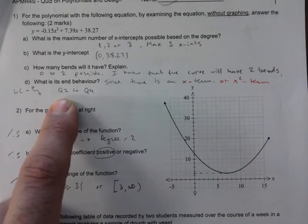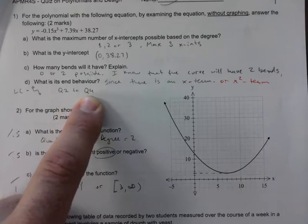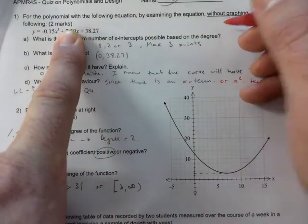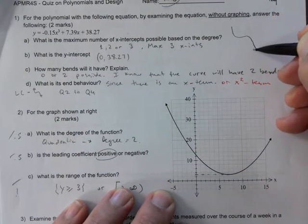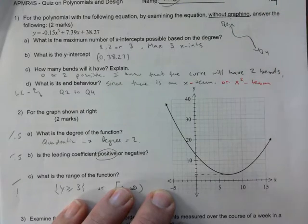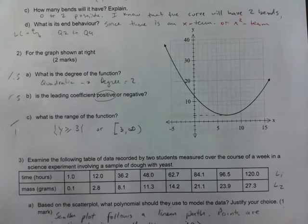And I don't blame you if you don't, right? It was a short lesson. But anyways, quadrant two to four for this one. We know that it goes like this, right? So quadrant two to quadrant four, no more to be said there.